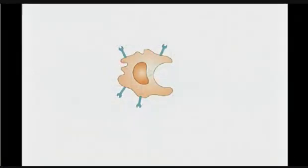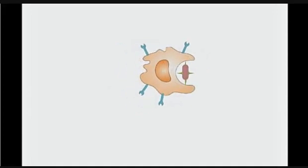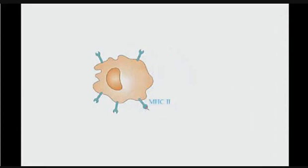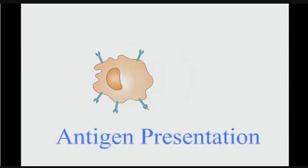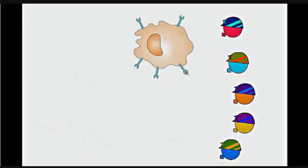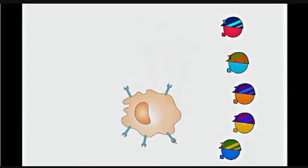The first phase is the activation phase. A macrophage or any phagocytic cell encounters a pathogen and engulfs it. The pathogen is fragmented into antigen fragments, which are then presented by the MHC2 protein on the surface of the macrophage. This is called antigen presentation, and the macrophage in this case is the antigen-presenting cell.